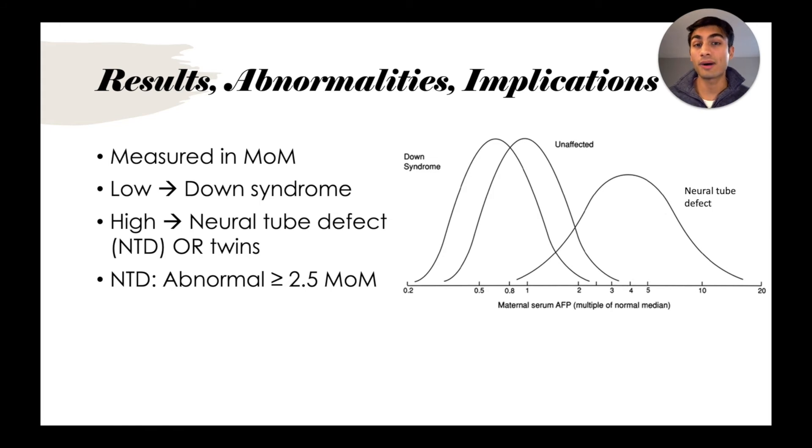The hypothesis for why this is the case is that in a neural tube defect, there can be a deformity in the vertebrae, the spinal cord, cranium, or sometimes the brain. Because of that defect, this protein MSAFP can leak out of the CSF, which stands for cerebrospinal fluid. And then in the case of twins, because we have twice as many babies, the levels would logically be elevated.